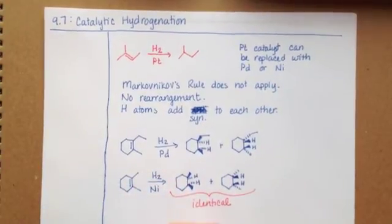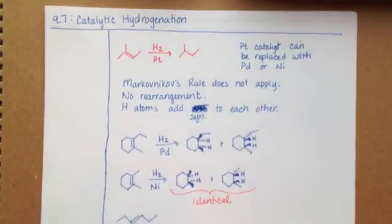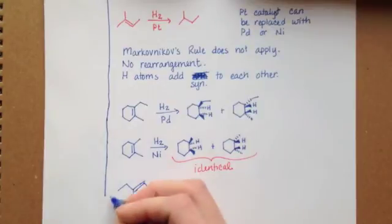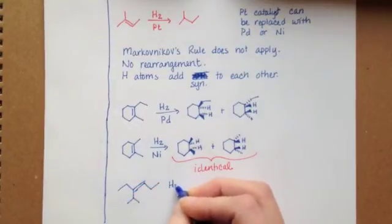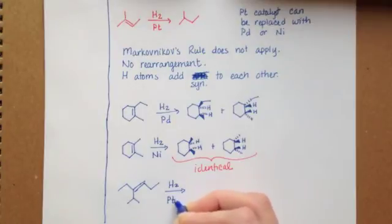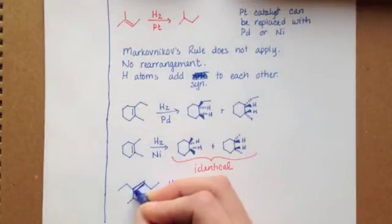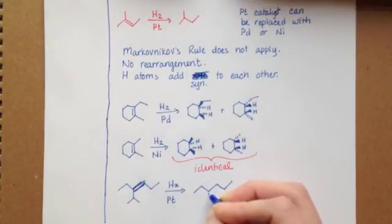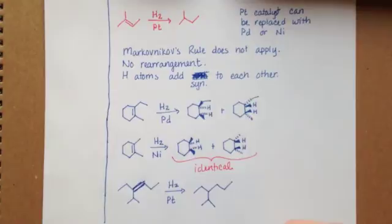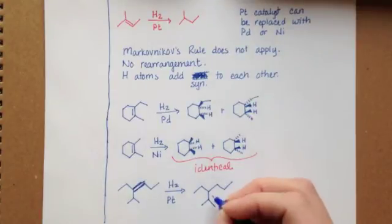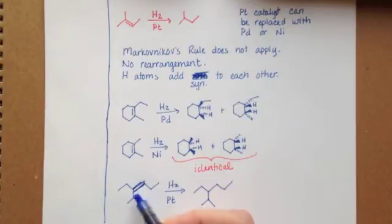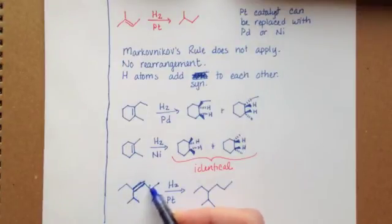Let's do one more example. Again, all you have to worry about, what we're doing is making sure you can just pick any two functional groups that are on the same side of each other on the original alkenes. Let's just take the isopropyl group and the ethyl group. They're both on the same side. They're cis to each other on the alkene.